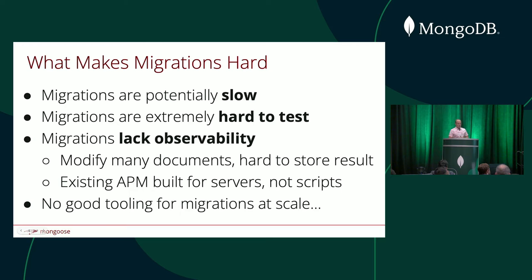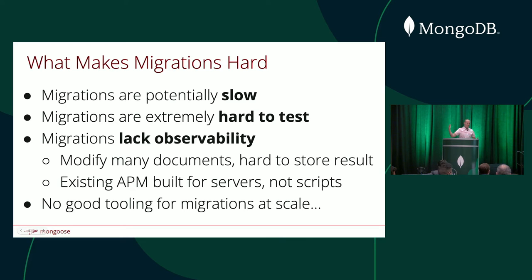Migrations are also very hard to test, because you might be migrating 10 million documents, and every single data inconsistency that has ever happened in the history of your system may cause the migration to crash. There's just a combinatorial explosion of things that can go wrong. Another problem is a lack of observability. If you're writing a migration, it's hard to write it with observability in mind. Migrations modify a lot of documents, so it's hard to store the exact results of what changed. And existing APM solutions like New Relic or Sentry are mostly built with servers in mind — they're not built to store the results of one-off scripts that run for hours and modify a whole bunch of data. So I don't really think there's a good tool out there for running migrations at scale. That's why we built one.